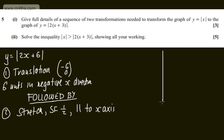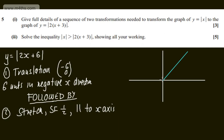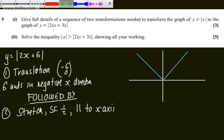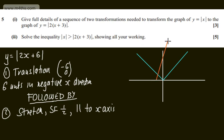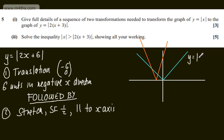Here's a quick sketch. We have the modulus of x, which looks like a V-shape with gradient one — a positive branch to the right and a negative branch to the left. Then the modulus of two lots of x plus three gives a steeper line, with two points of intersection to the left of the y-axis.